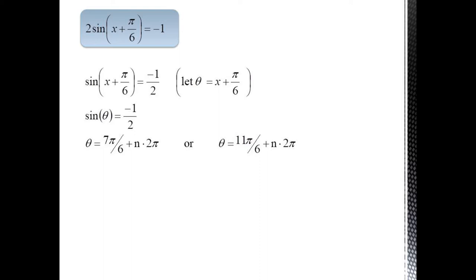This trick is not limited to just multiples of angles. We can use the same trick for 2 sine x plus pi over 6 equals negative 1. Solving this for sine, we get sine of x plus pi over 6 equals negative 1 half. And now we can think about letting theta equal x plus pi over 6. And we have sine theta equals negative 1 half,